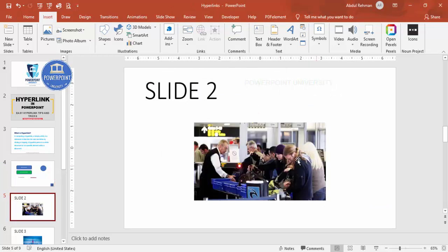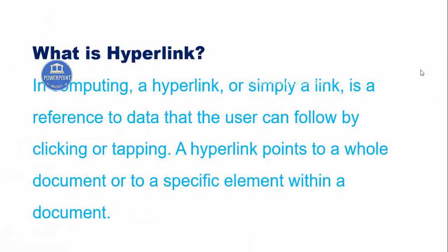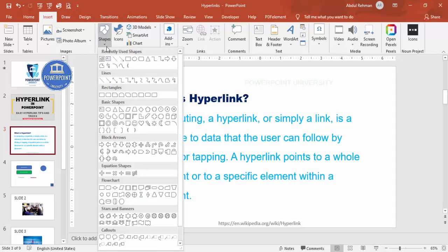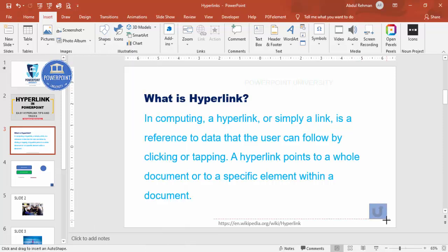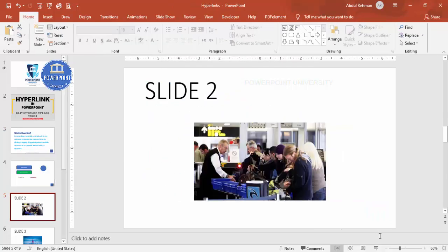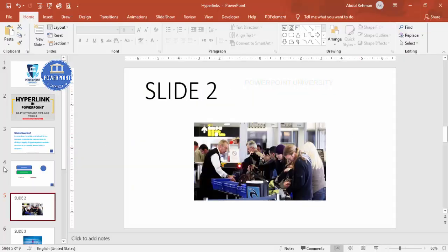You can also add a hyperlink to an image. Select the image, go to Insert > Link, choose a slide — for example slide three — and click OK. In slideshow mode, clicking the image navigates to that slide. To add a back-navigation button, go to Shapes, scroll to Action Buttons, and choose the Return button, which links to the last viewed slide. Clicking it takes you back to where you came from. This is the simplest way to use hyperlinks, and they are very important for your presentations.